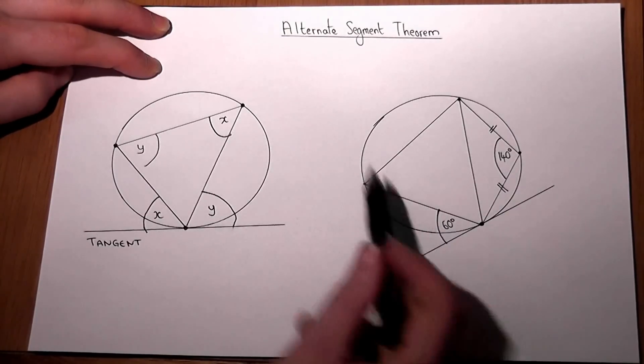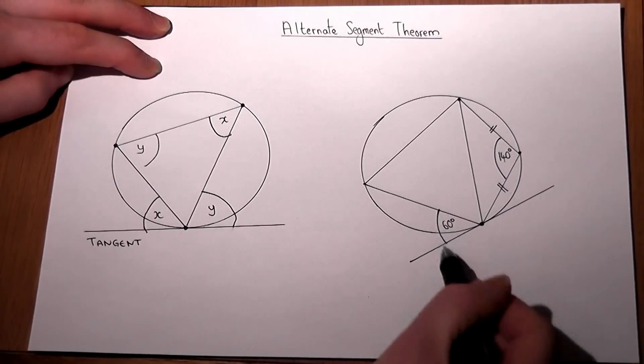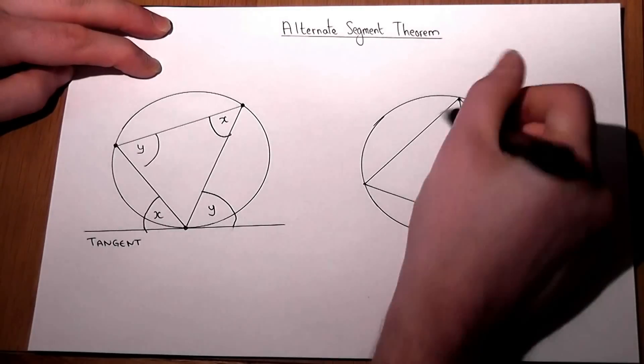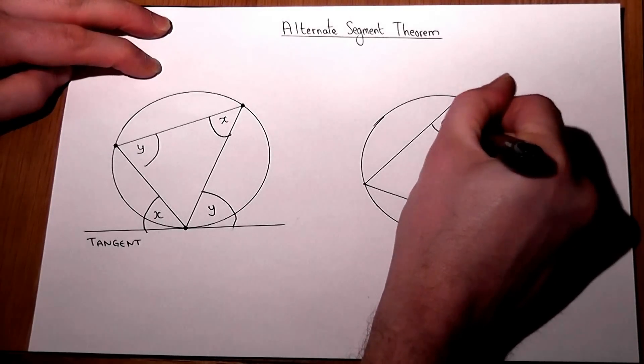Now, the alternate segment theorem tells us that if this angle here is 60, then look at this triangle here, the angle opposite, or pair, must also be 60.